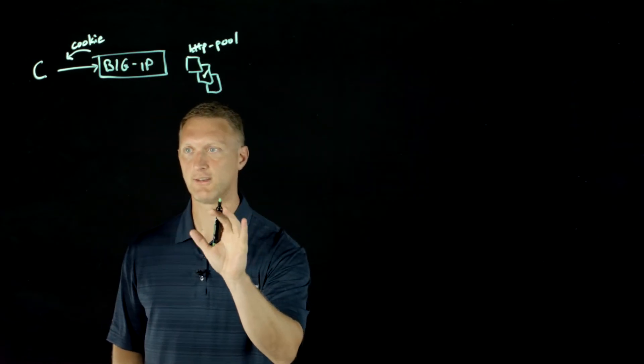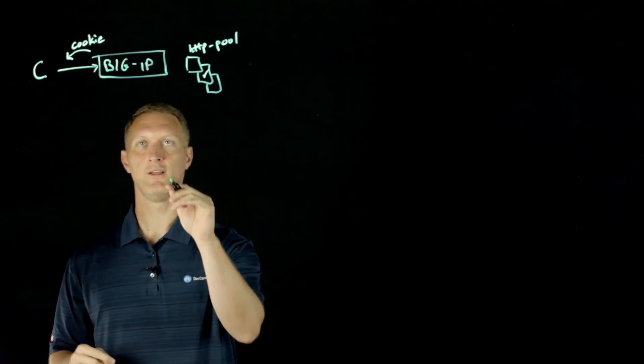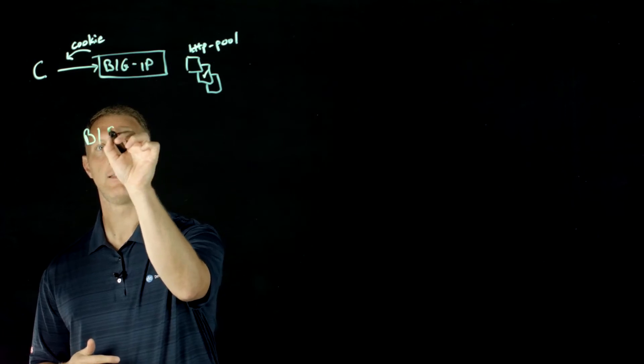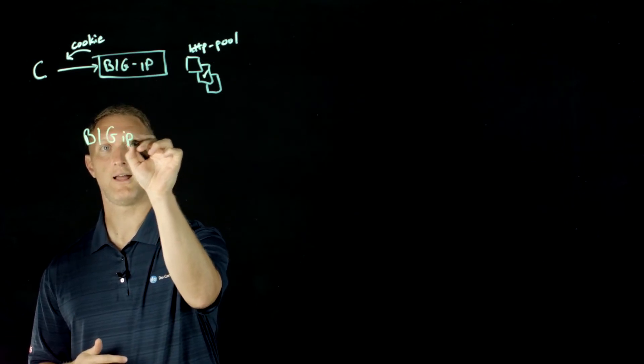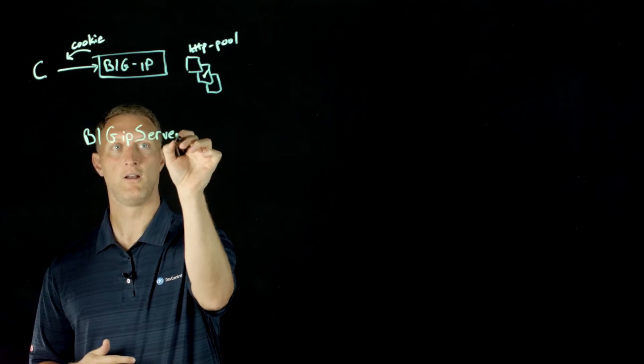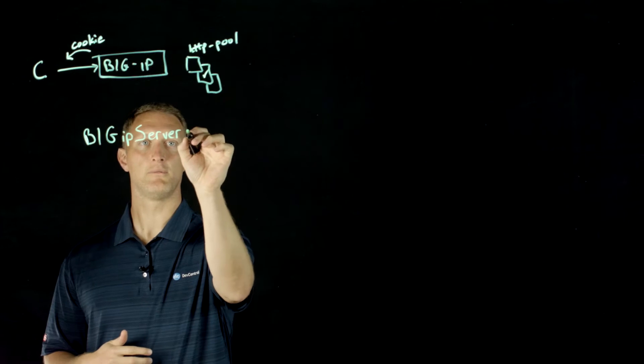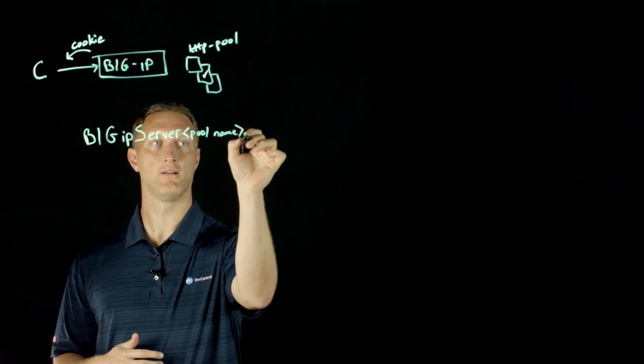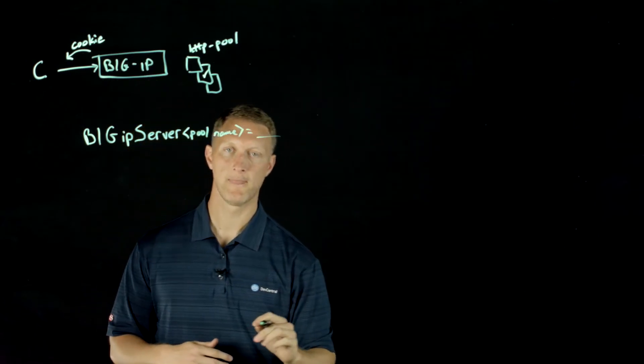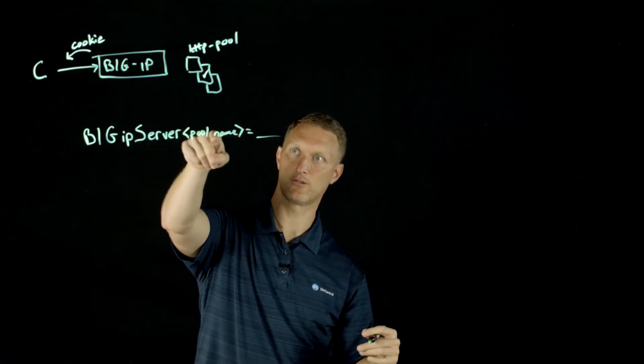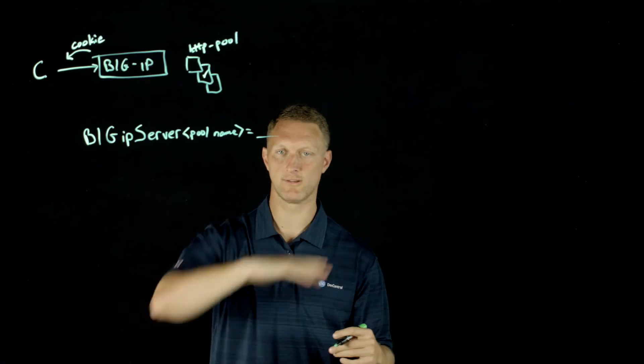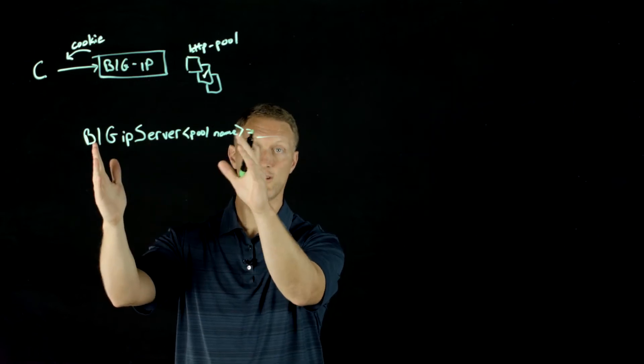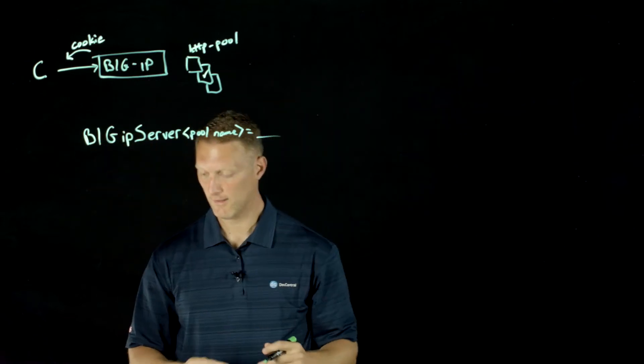The first thing I want to mention is the default name of the cookie itself. You can change any of this if you want to, but the default name is big capital letters BIG, then small IP and then Server, and then pool name right here, and then equals this value. So in our example, this would be BIGipServer.HTTP_pool equals a big old whole bunch of numbers. That's the default nomenclature, the naming convention for the cookies that the big IP is going to create.